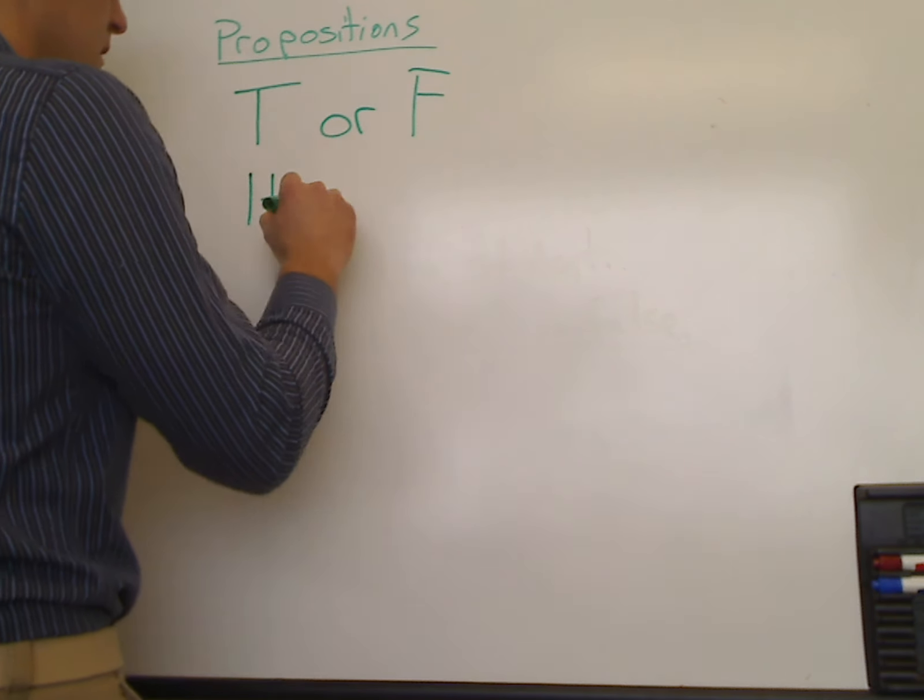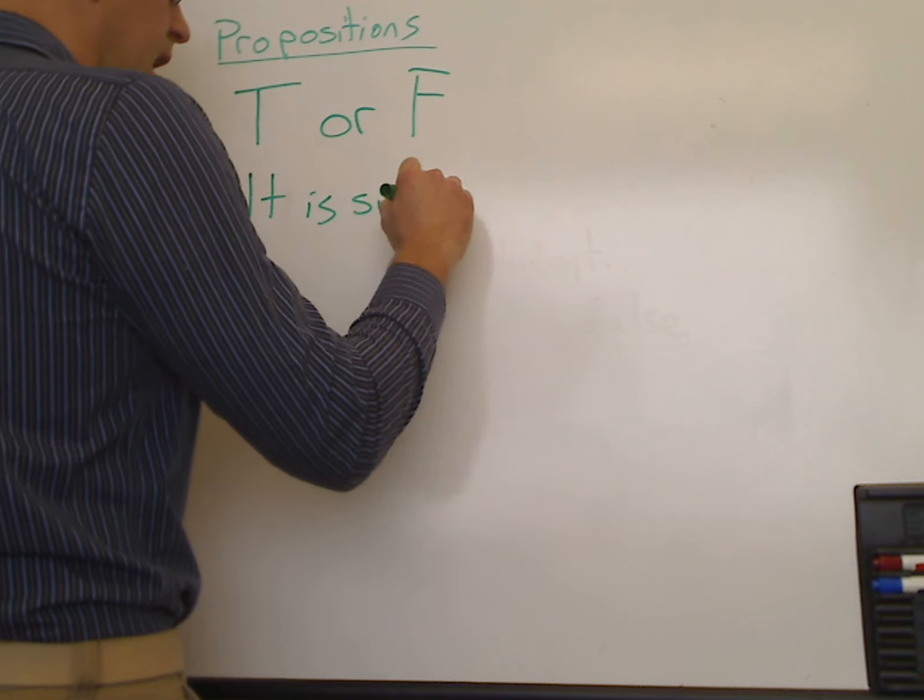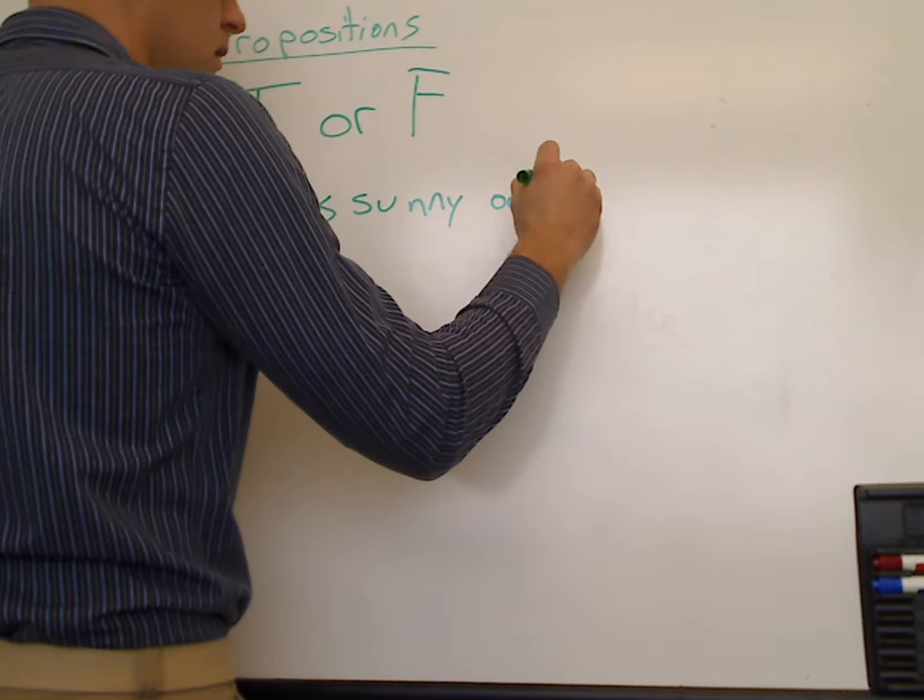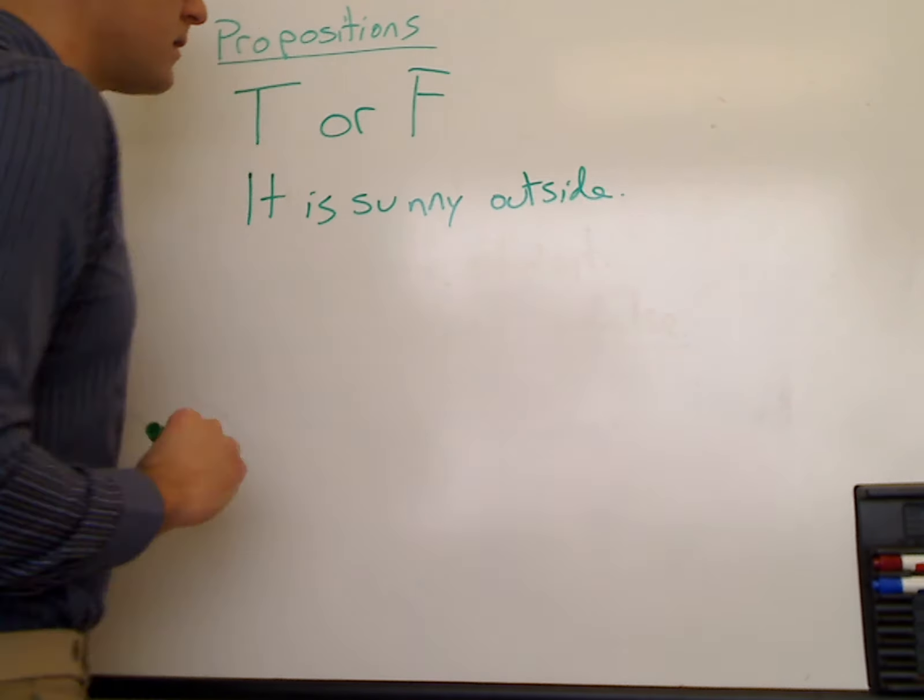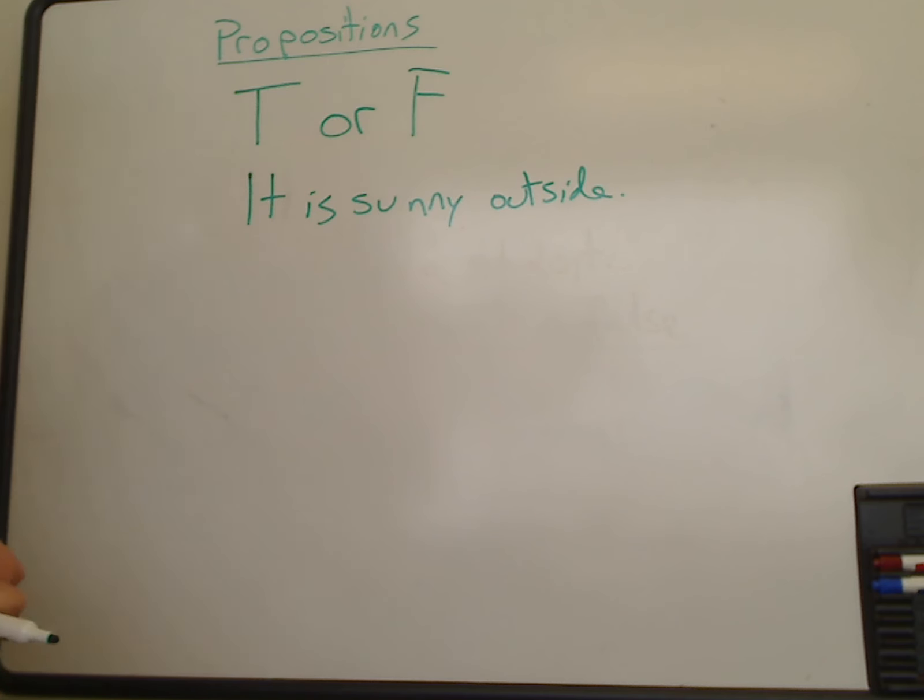For example, if we say it is sunny outside, this is an example of a statement that's either true or false. It's either sunny or it isn't. Therefore, this is a proposition.